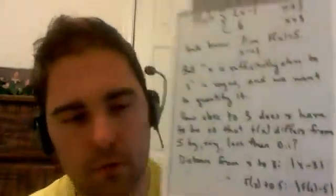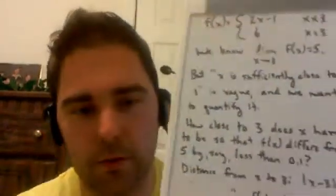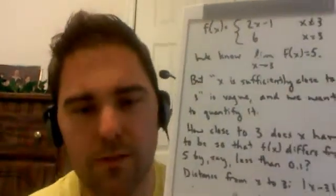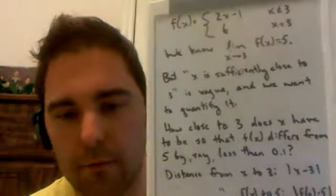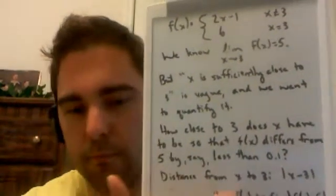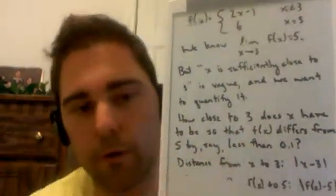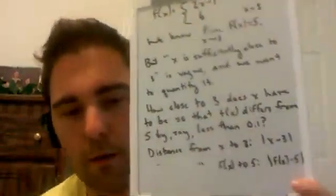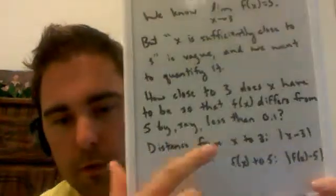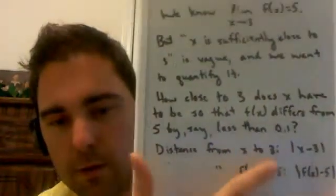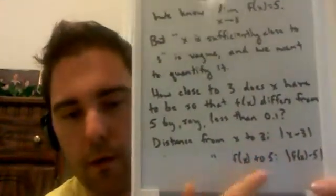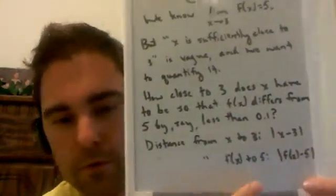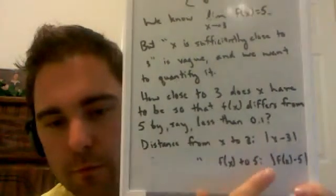So we want to try to quantify that a little bit and see just how close x has to be to 3 in order for f of x to differ from 5 by less than 0.1. Just a little bit of notation: the distance from x to 3 is going to be the absolute value of x minus 3, and the distance from f of x to 5 is the absolute value of f of x minus 5.